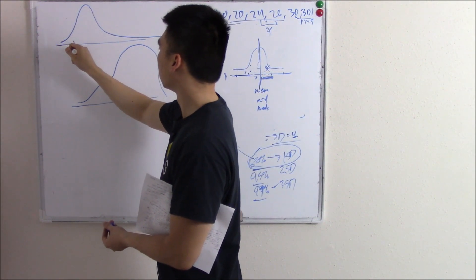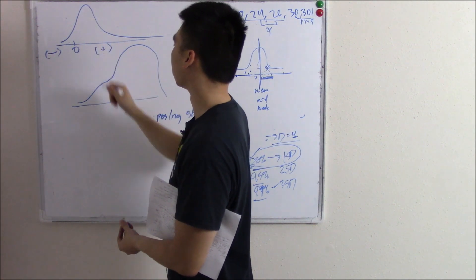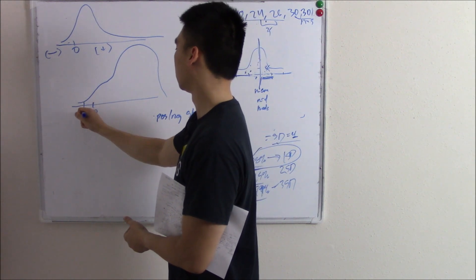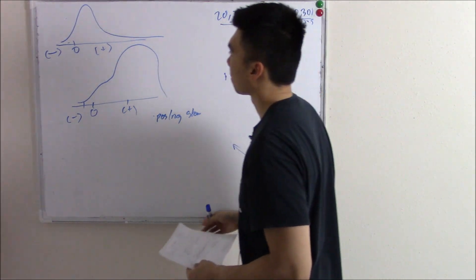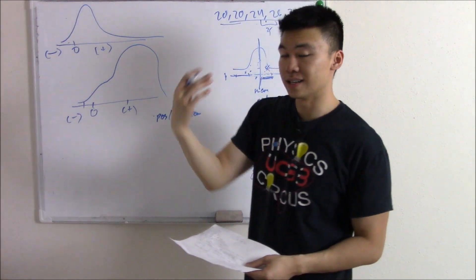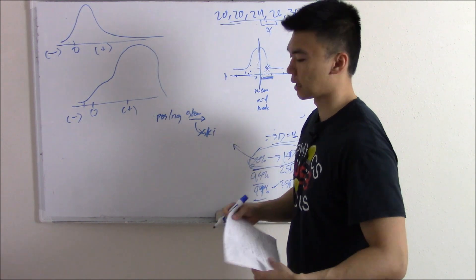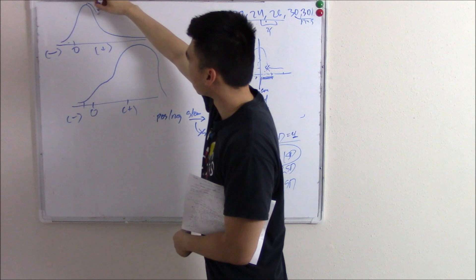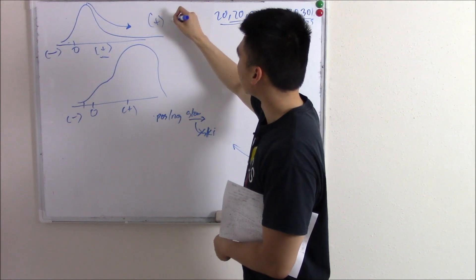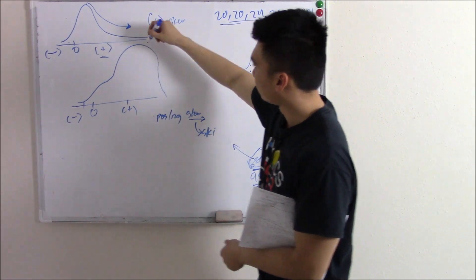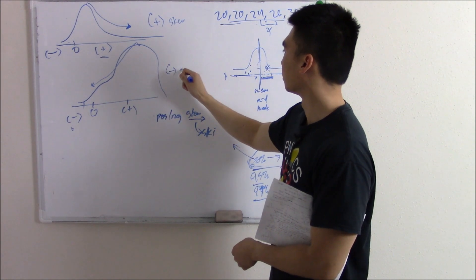How do you find out whether a graph is positively or negatively skewed? Skewed sounds like 'ski' — like you're skiing down a mountain. You ski down the mountain: if you're heading towards the positive end, you have a positive skew. If you're heading towards the negative end, you have a negative skew.